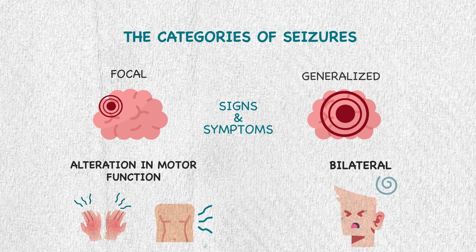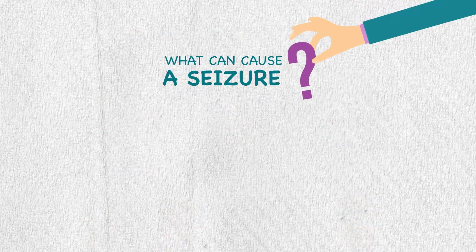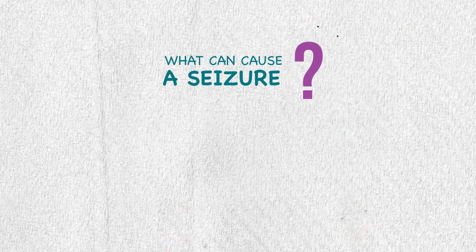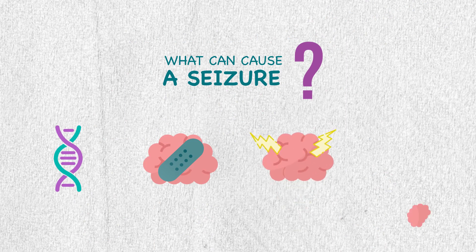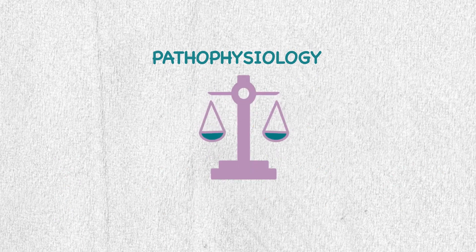Generalized seizures can come in the form of an absence seizure, which is a sudden interruption of ongoing activity, described as a blank stare. What can cause a seizure? It's either genetics or injury to the brain, stroke, or brain tumors.